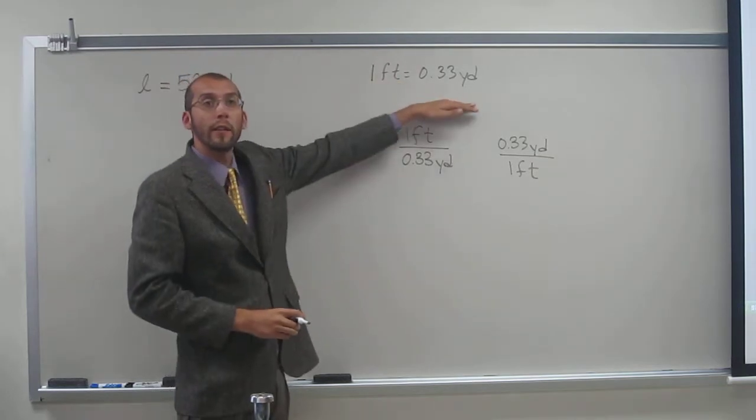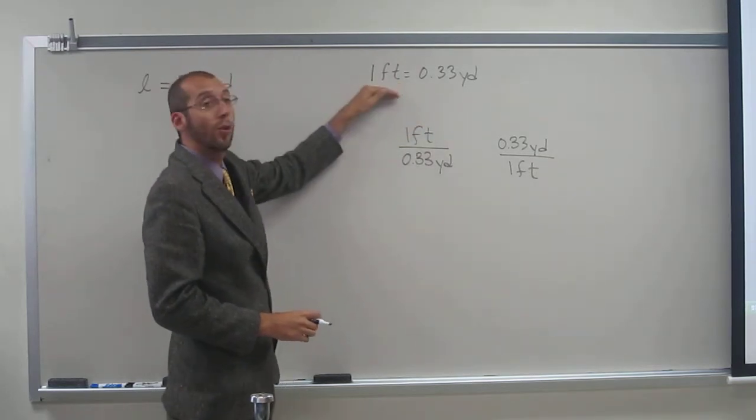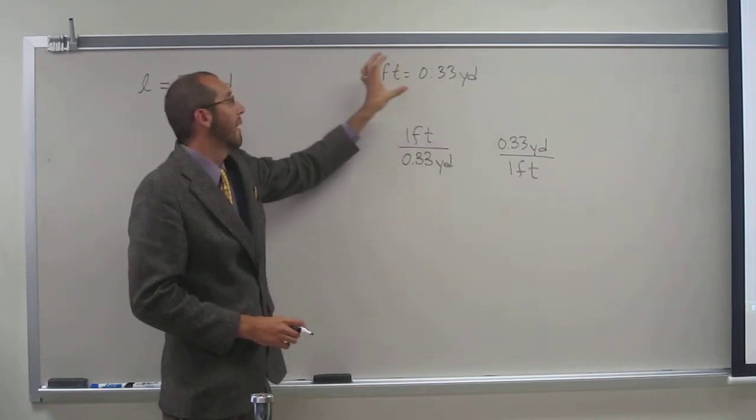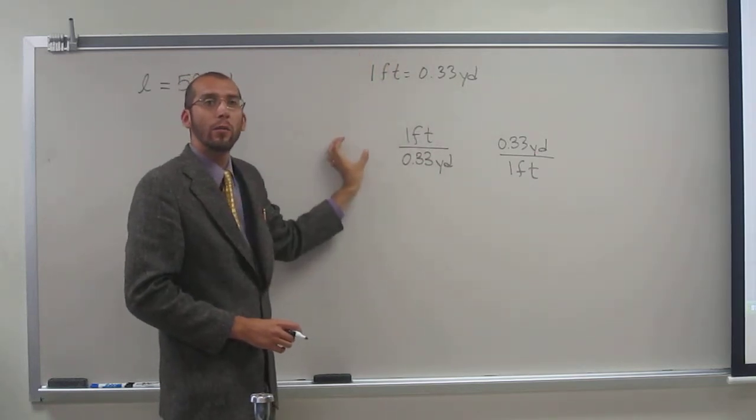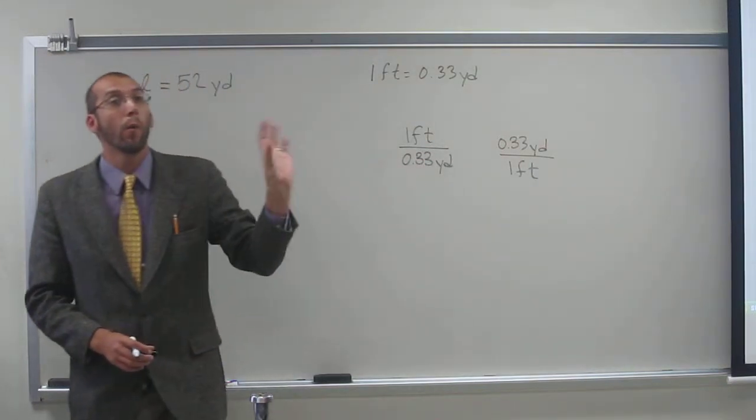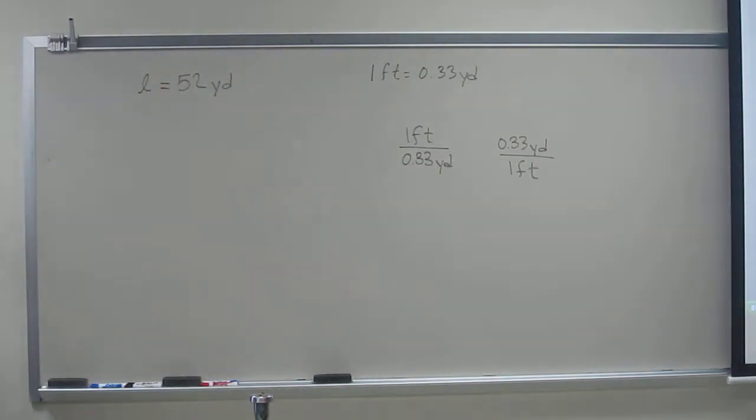Because this equals this, right? This would be like 2 equals 2. Is everybody okay with that? If I took 2 divided by 2, what number would I get? 1. If I multiply 1 by any other number, what number do I get? What the number was before, right? Exactly.